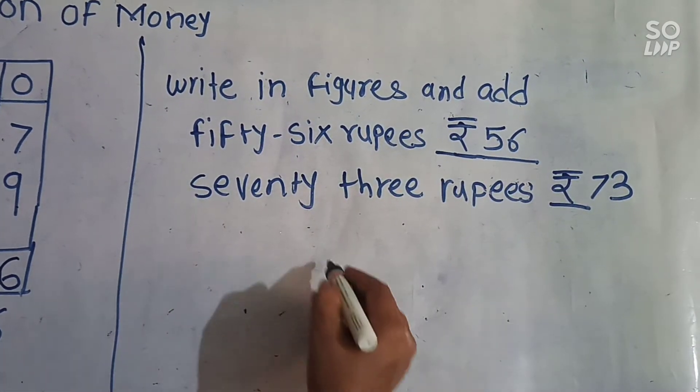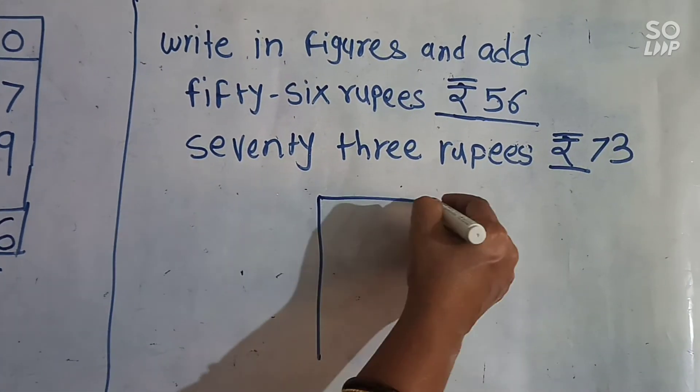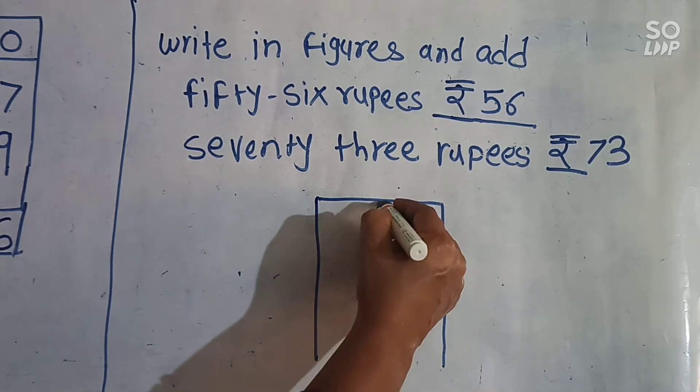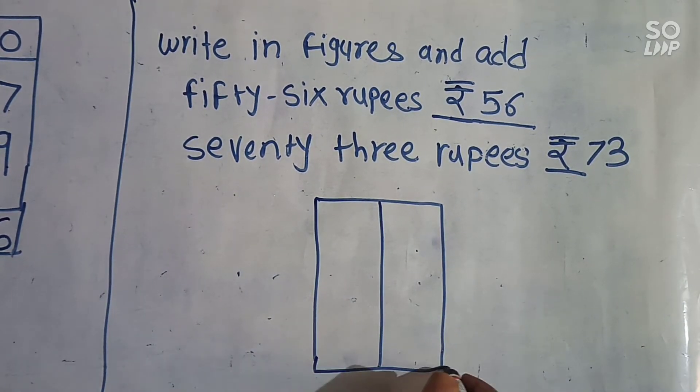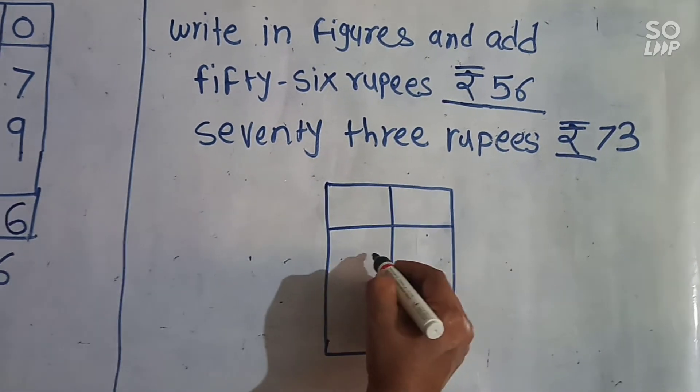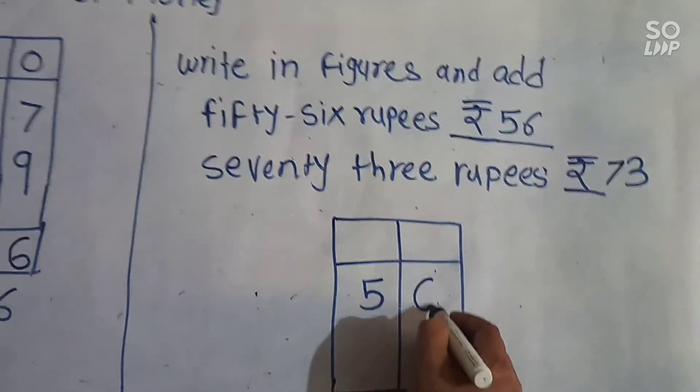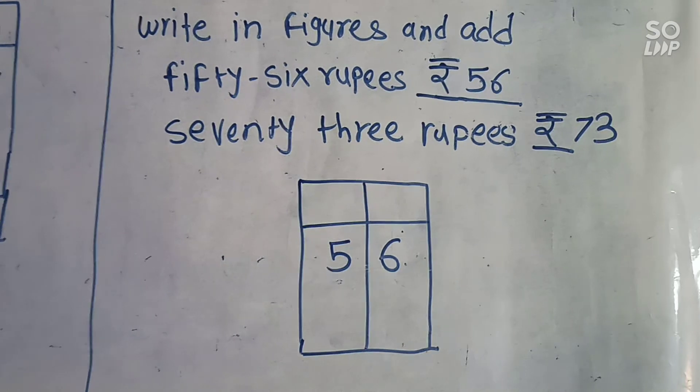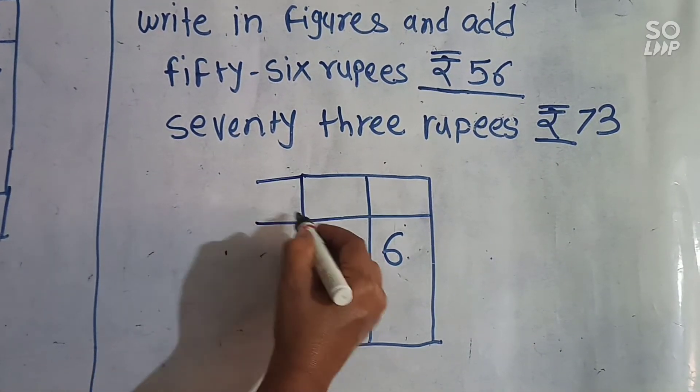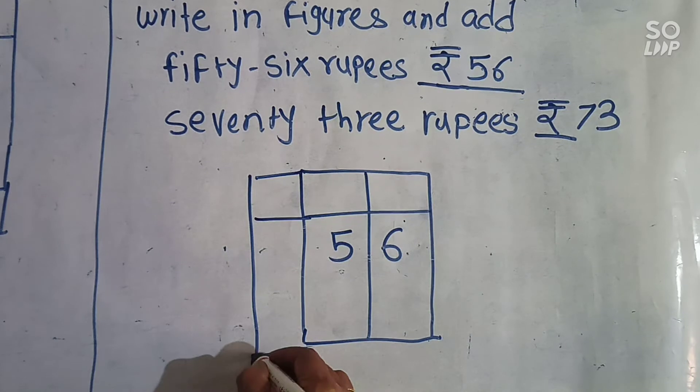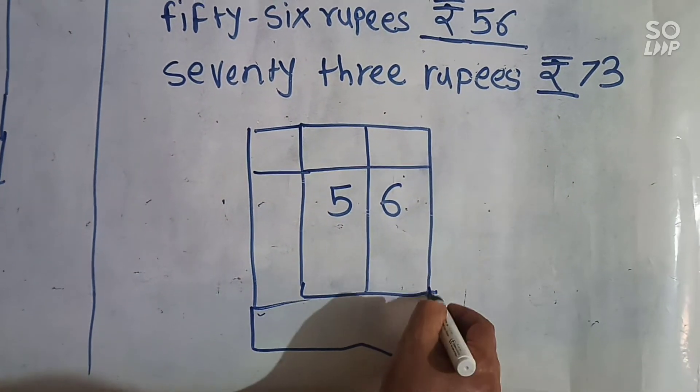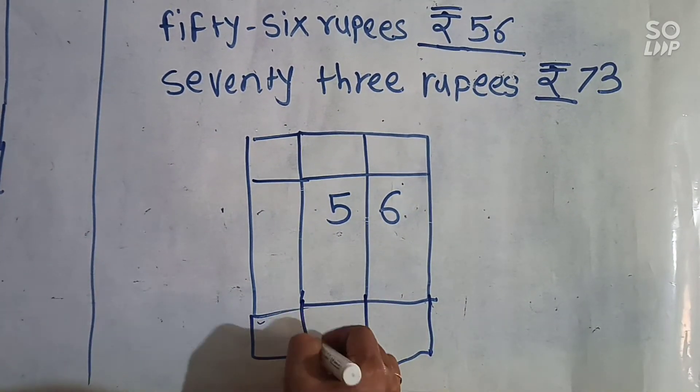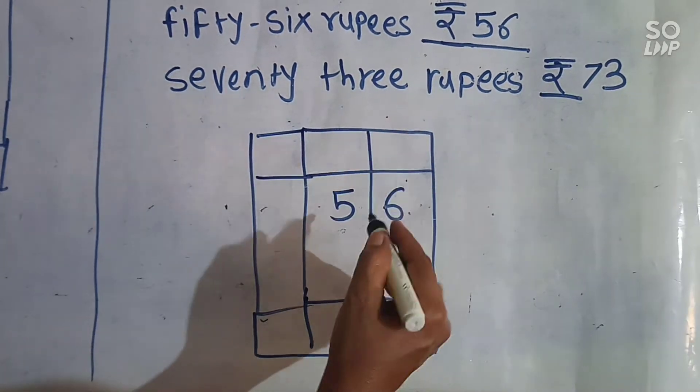Now we have to add this. First we have to write 56 and then 73.